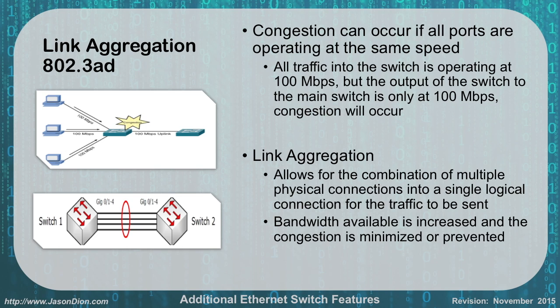To overcome this, we have to create either a faster link between our switches, and if that's not possible because you're using older Cat5 cabling where you're limited to 100 megabits per second, we can instead do link aggregation, where we bundle together several 100 megabit per second connections into a single connection. In the bottom here you can see I have four ports, ports one through four, on each switch being bundled together — that's what that red circle symbolizes — giving us four gigabytes of bandwidth.